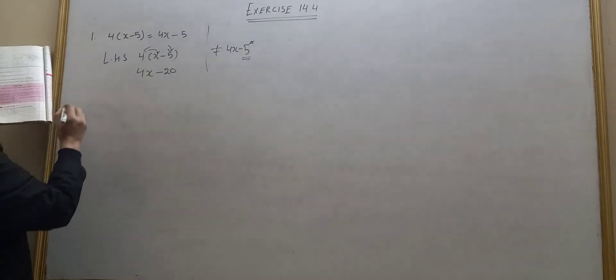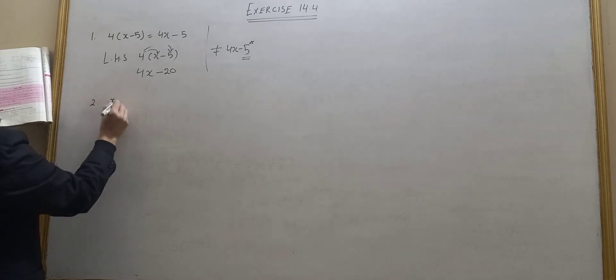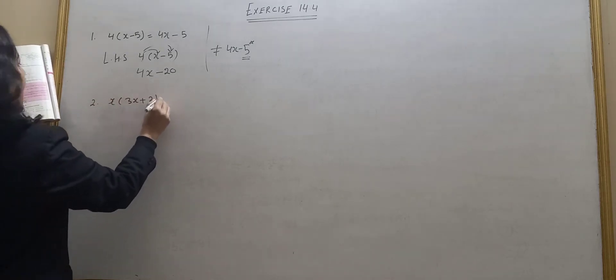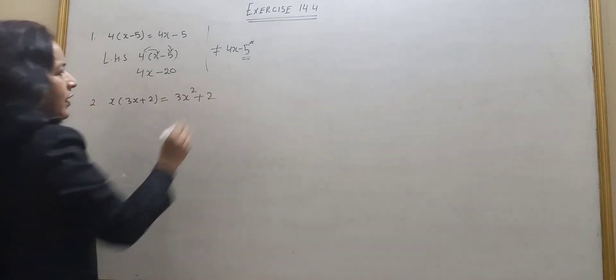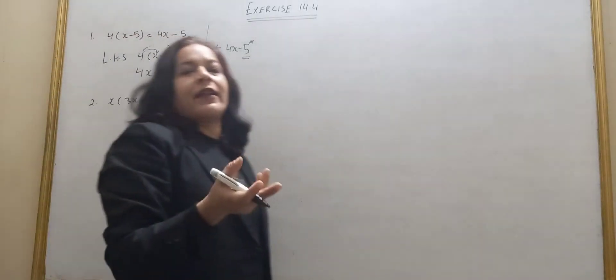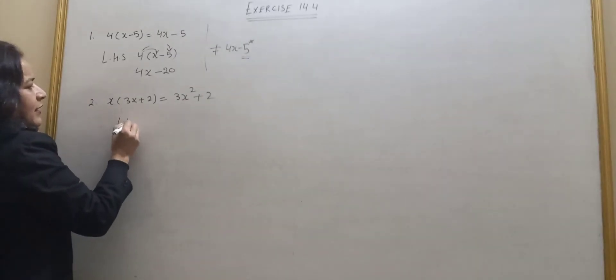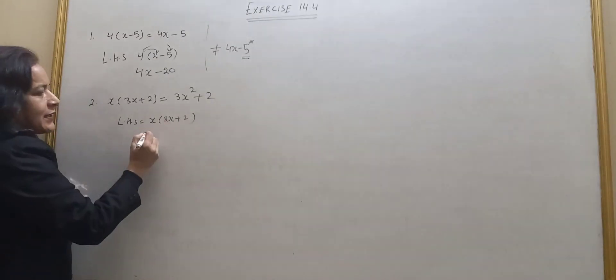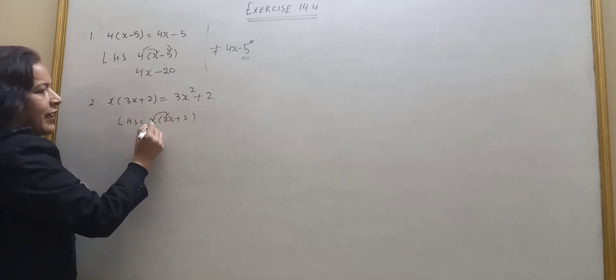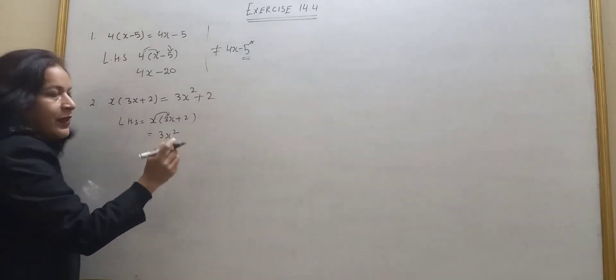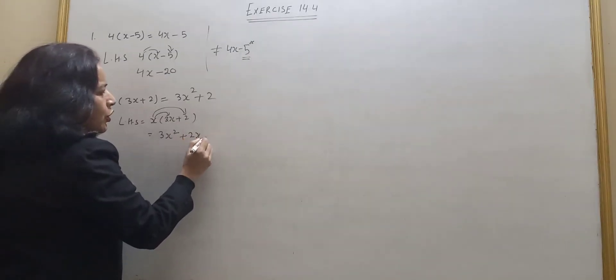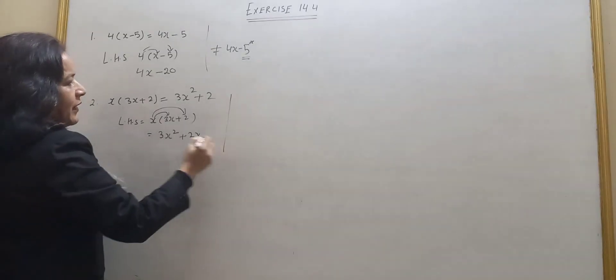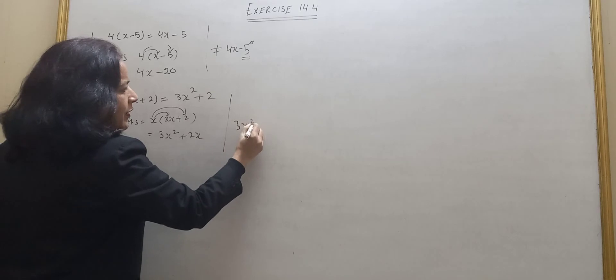Clear? Then the second statement: x into 3x plus 2 is equal to 3x plus 2. There is some error. Left hand side is x into 3x plus 2. I multiply x with 3x, then multiply x with 2. So x into 3x gives 3x squared, then x into 2 gives 2x. But right hand side is 3x plus 2.